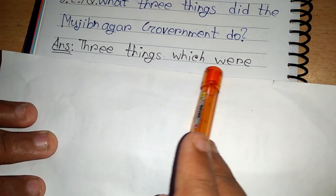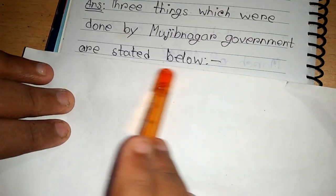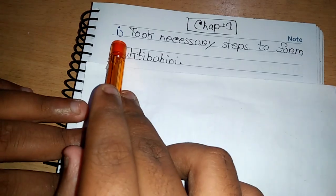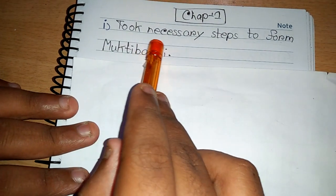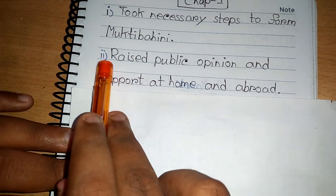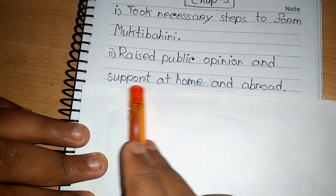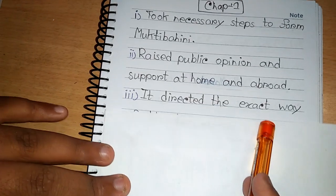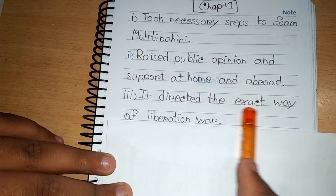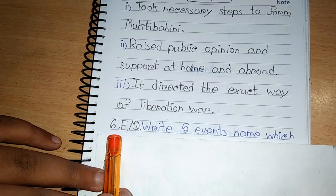Three things which were done by the Mujibnagar government are stated below. Number 1, they took necessary steps to form Mukti Bahini. Number 2, they raised public opinion and support at home and abroad. Number 3, it directed the exact way of the liberation war. This was the third question.